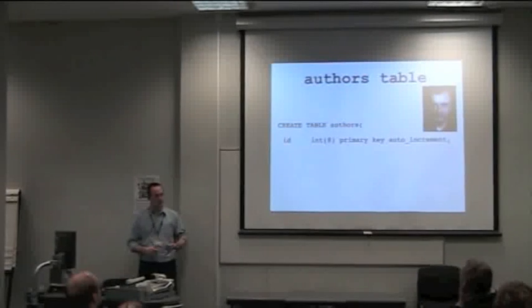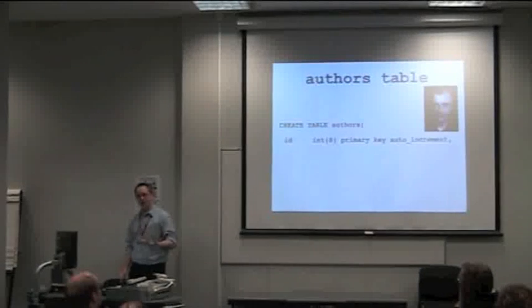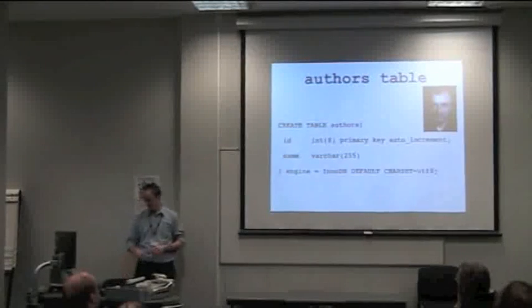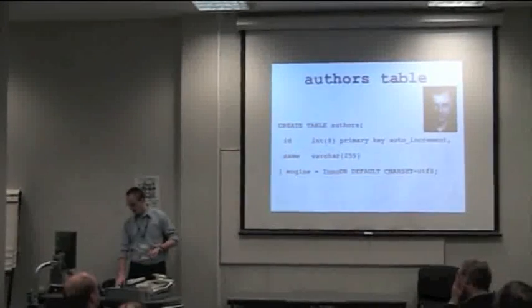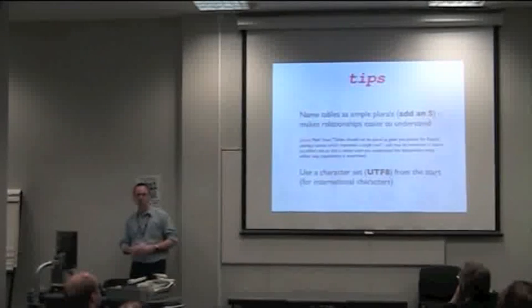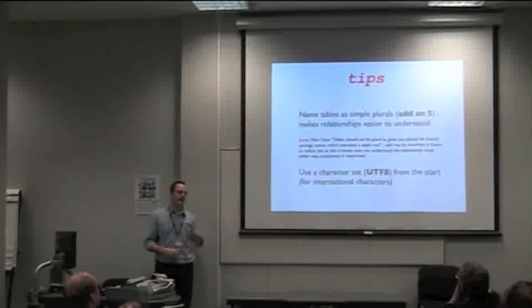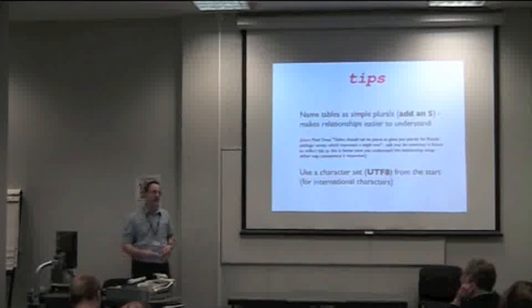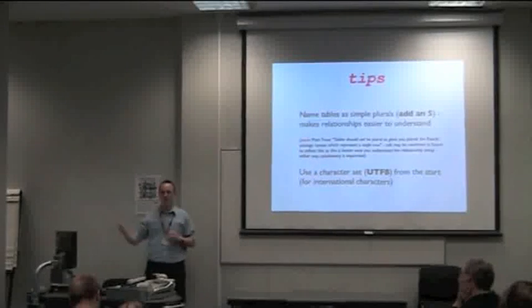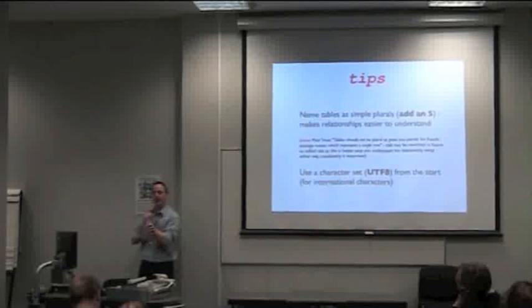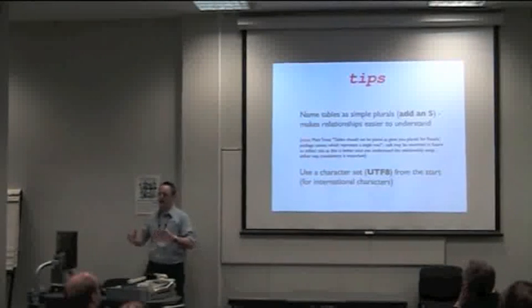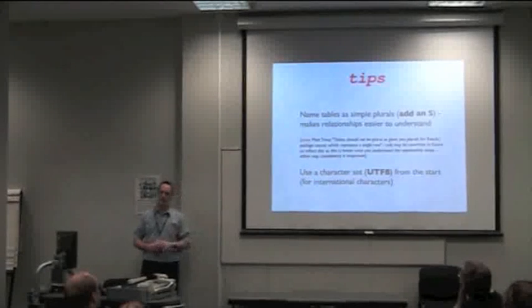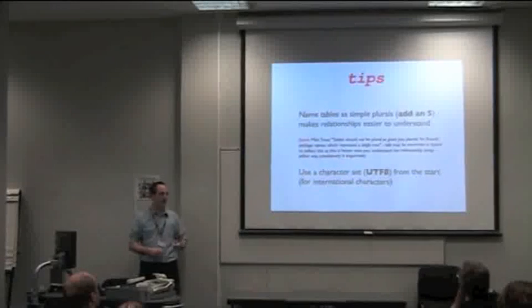So I've created an ID, an individual identifier for each author, and I'm also going to give an author a name. A couple of things on this. I would suggest you always name your tables as plurals. Matt Trout who wrote DBIC and I've been arguing back and forth, I spoke about half an hour ago, he said he now agrees, and he uses plurals as a table. But the ultimate thing is actually you have to be consistent.